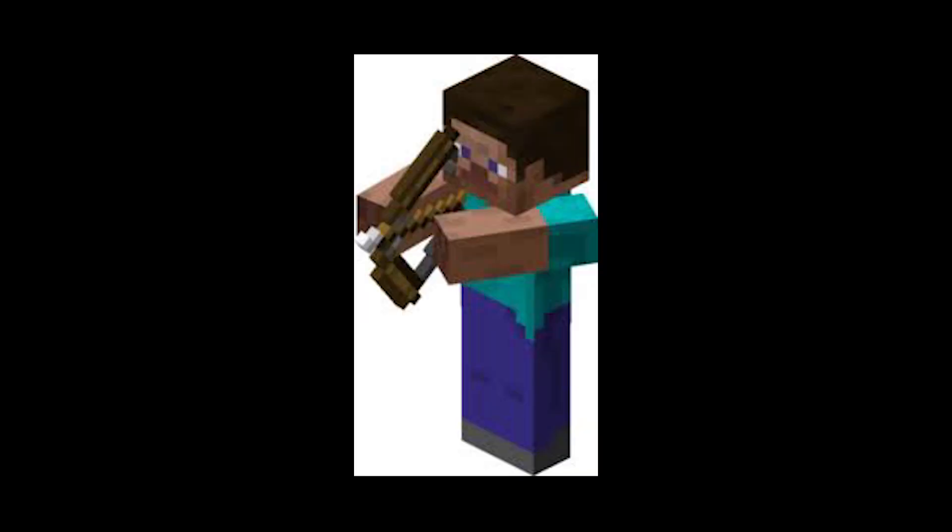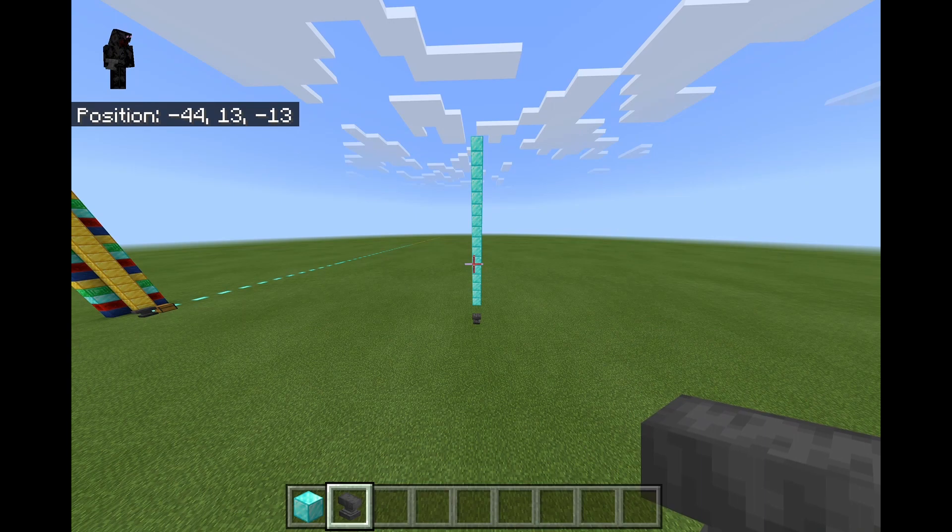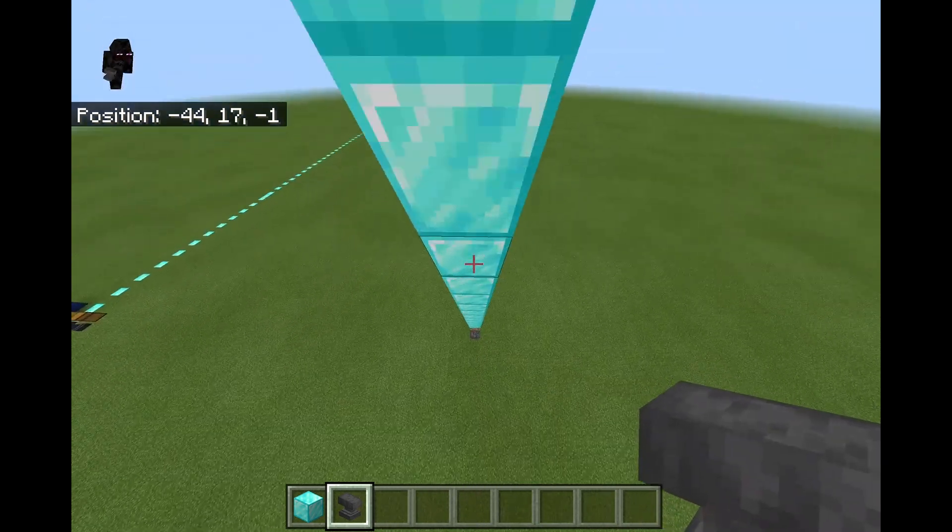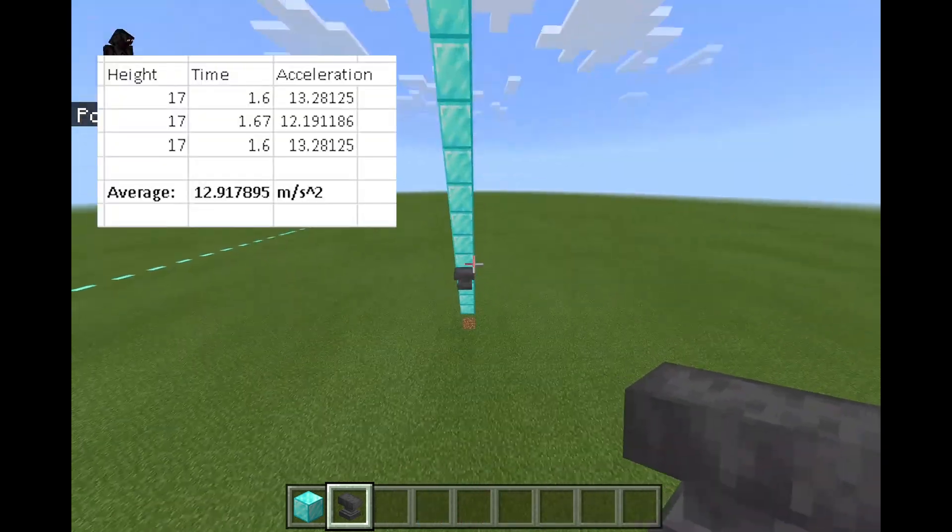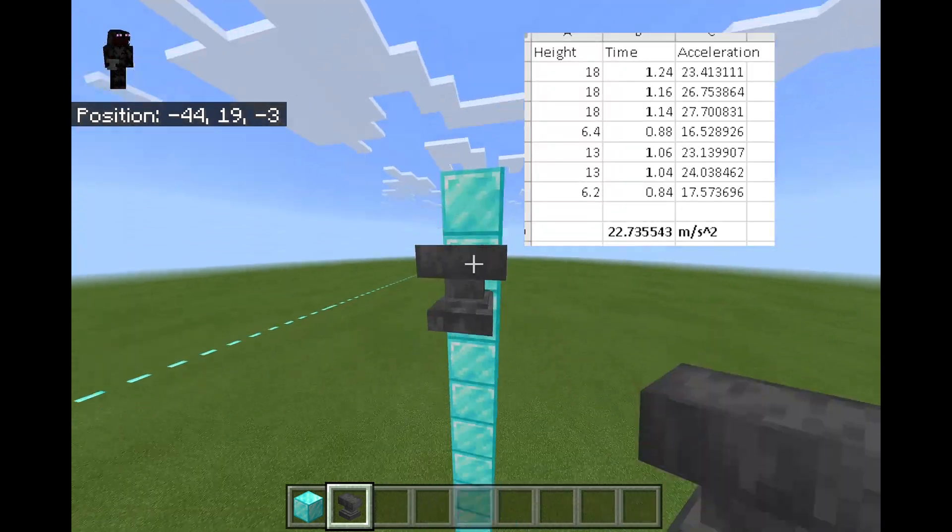In my last video, I found it for an arrow, which is best because its aerodynamic shape makes for the least interference from air resistance. I attempted to find the acceleration of an anvil to compare it. Expectedly, it was much slower, only about 13 meters per second squared. So we're going to be using 23 meters per second squared to keep it simple.